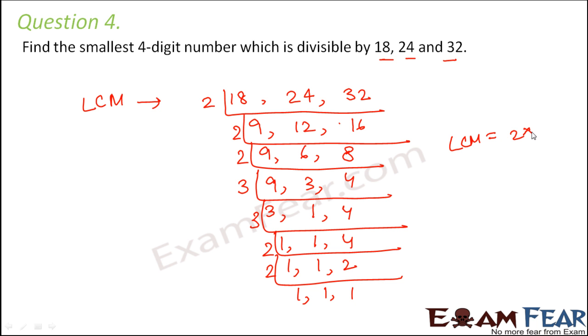So what is the LCM? LCM is equal to 2 into 2 into 2 into 3 into 3 into 2 into 2, that is 8 into 9 into 4. So this is equal to 72 into 4 which is equal to 288.